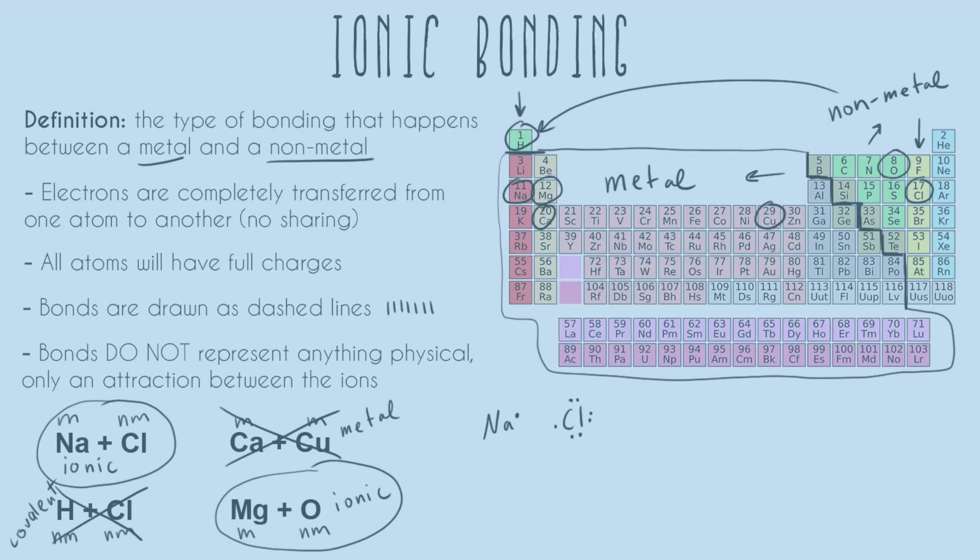And now back to the octet rule. Anything that has seven electrons is going to want to have one more. And anything that just has one valence electron is going to want to get rid of that one electron. So what's going to happen is that when these two meet up, sodium is going to say, I'm going to go ahead and give you this valence electron. I actually don't want it.